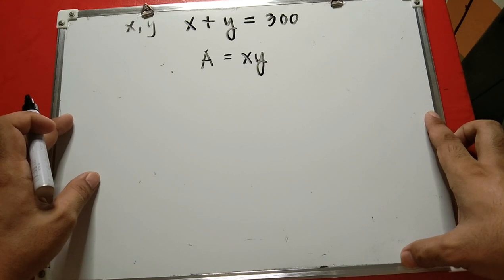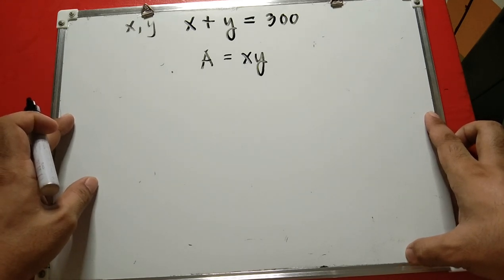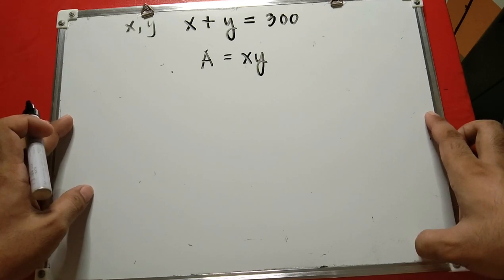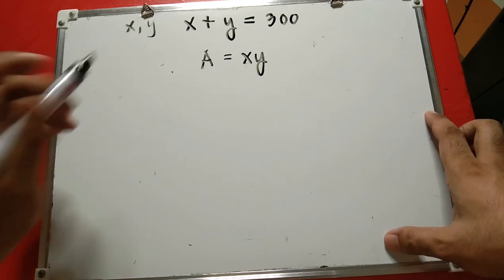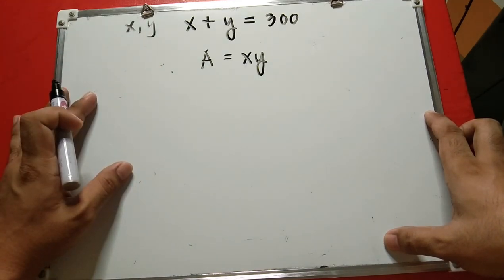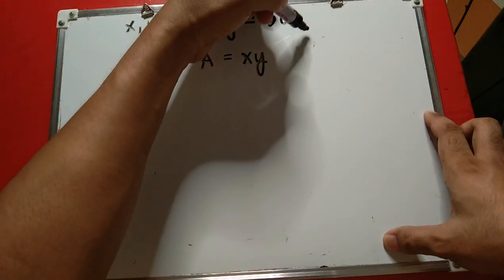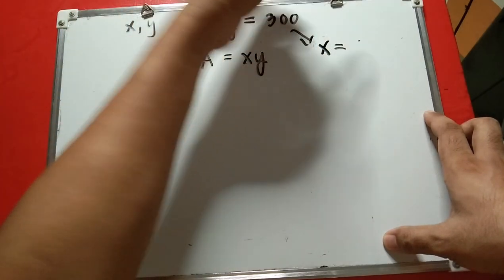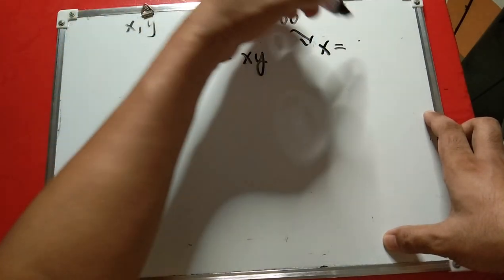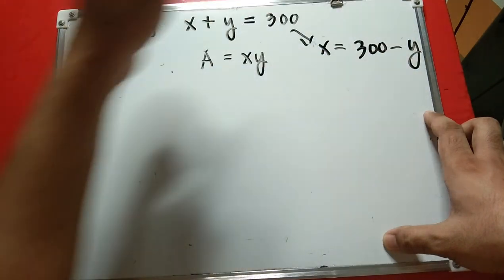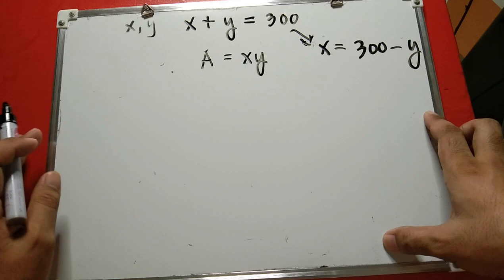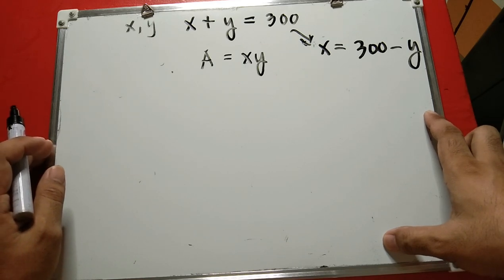Next, we need to solve the constraint for x or y — it doesn't matter which variable we solve for. We'll then plug this into the product equation. From x plus y equals 300, solving for x gives us x equals 300 minus y.